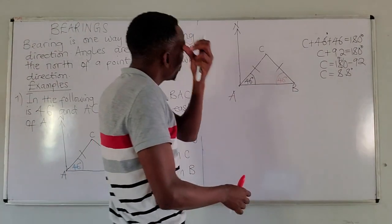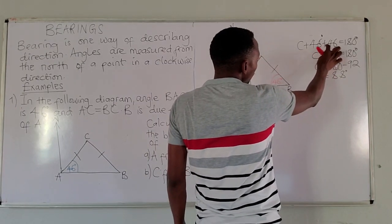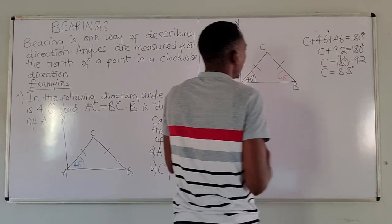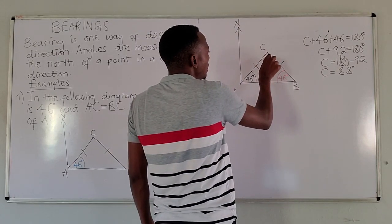When we do the calculation, we add 46 plus 46 together. From 180, we are going to get 88 degrees.